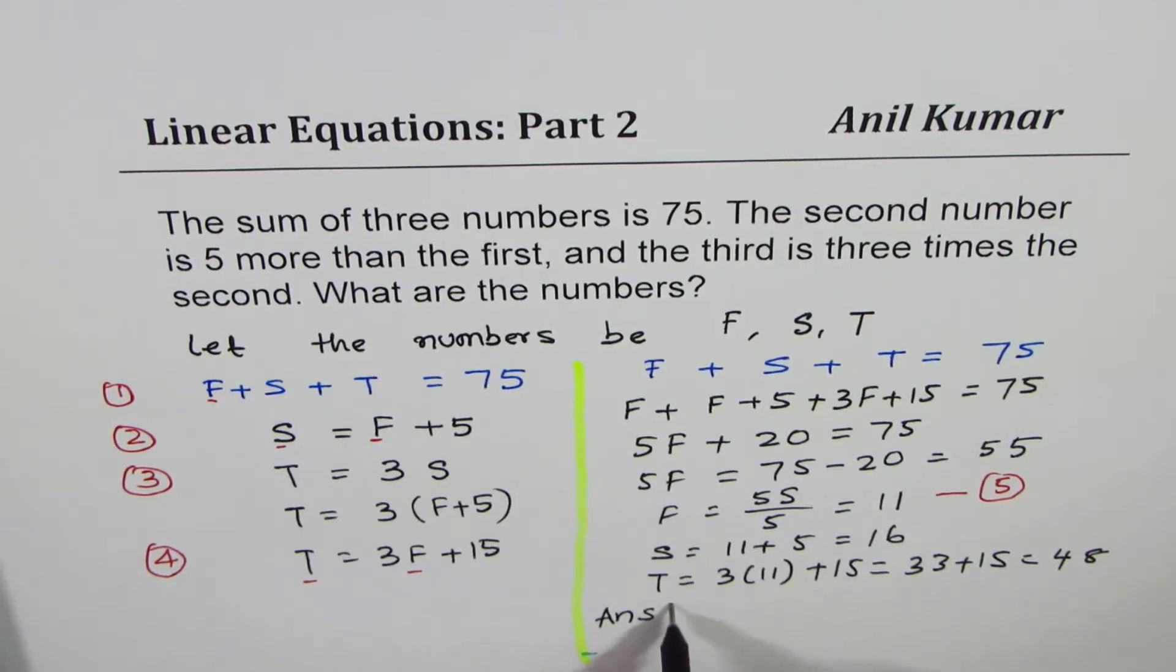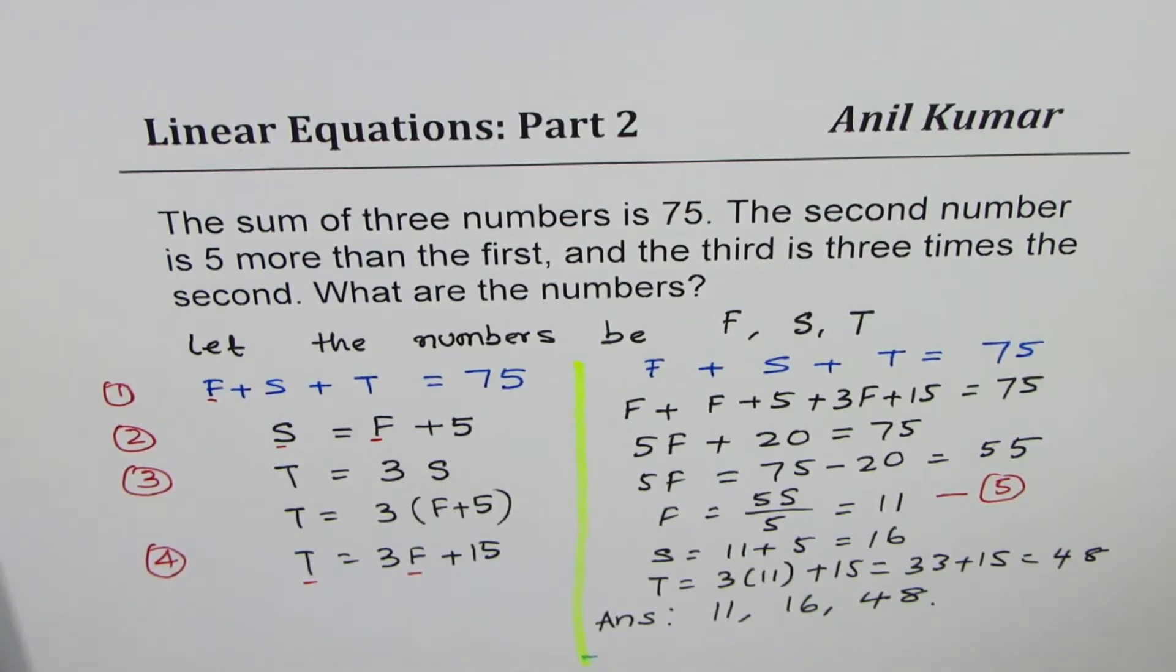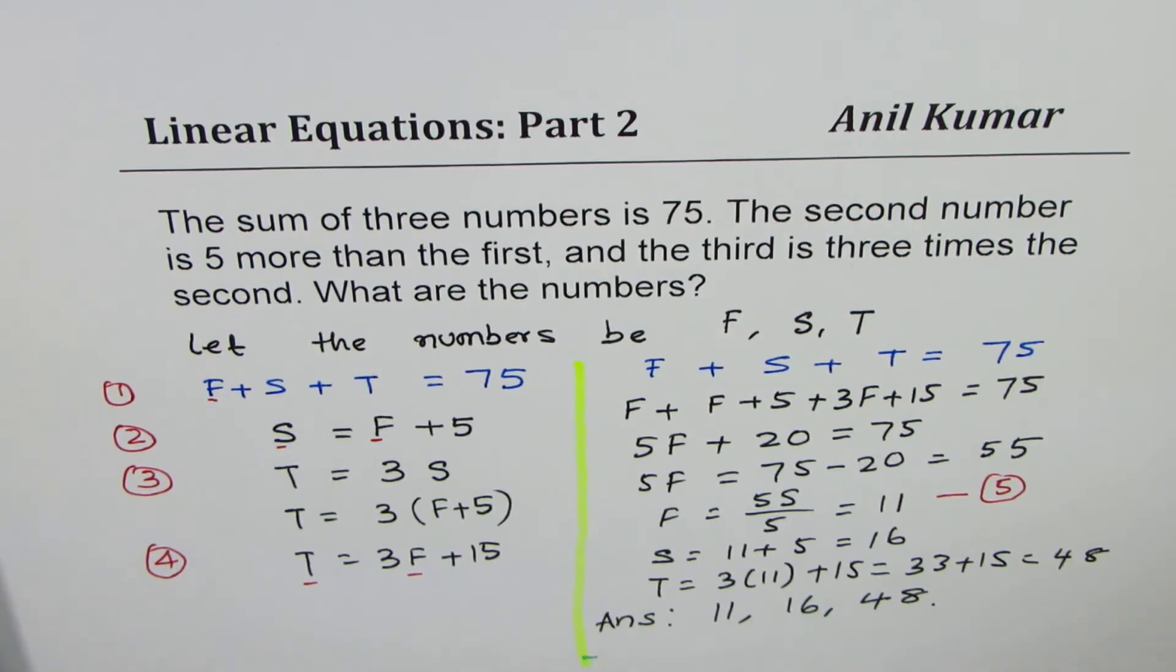That gives you 48. Therefore we can say our answer is that the three numbers are 11, 16, and 48. Just to check, add them up. If you add them up, do you get 75? 8 + 6 is 14, plus 11 is 25, 25 + 33 is 58, and 48 more is... their addition is 75, so it works.